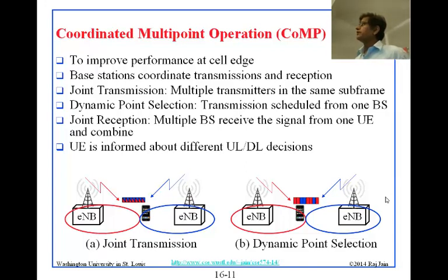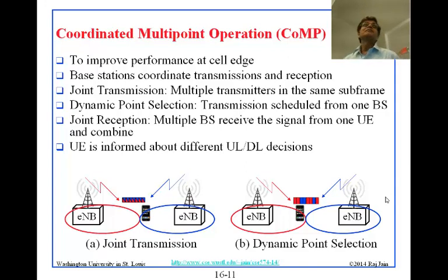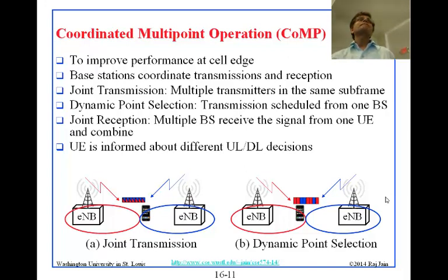How do they coordinate? They do not coordinate over the air. All of these cells are connected by wire to each other — every cell is connected by wire, otherwise signal cannot get there. So when we say coordination, that is all coming underground. It could sometimes be a wireless backhaul, but generally you can assume there is a wire going underground connecting to the cell tower.